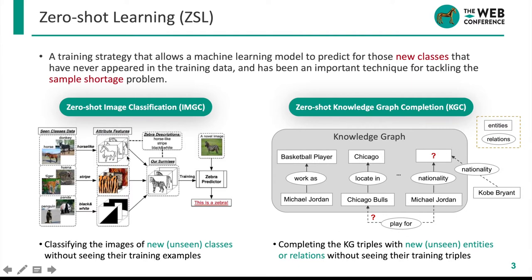We call the trained classes seen classes and the newly emerged classes unseen classes. Correspondingly, in zero-shot KGC they are seen and unseen entities or relations. ZSL is also widely applied in other tasks such as relation extraction and visual question answering. It is an important technique for the sample shortage problem.